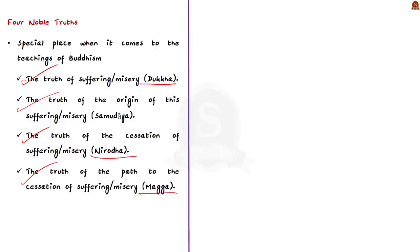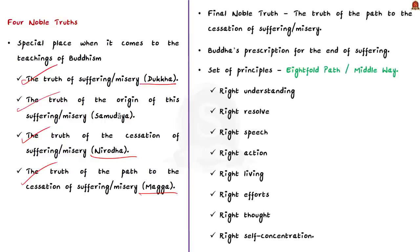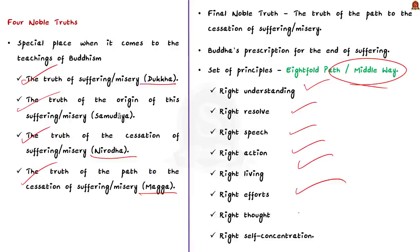Don't blindly memorize these terms — keep revising and you will retain them. Now the eightfold path of Buddhism, also called the middle way, is a set of principles: right understanding, right resolve, right speech, right action, right living, right efforts, right thought, and right self-concentration. You can use these as value addition in ethics answers by citing that Buddhism promotes these ideologies.